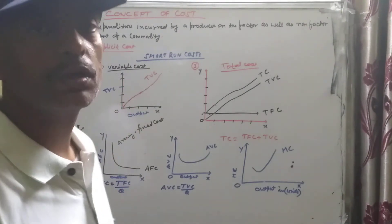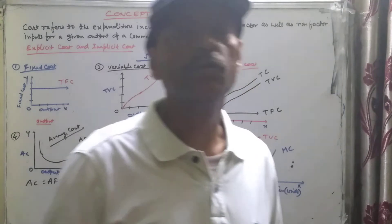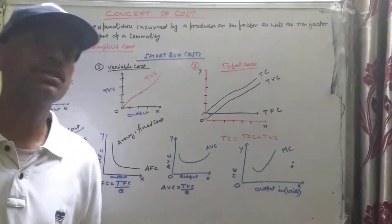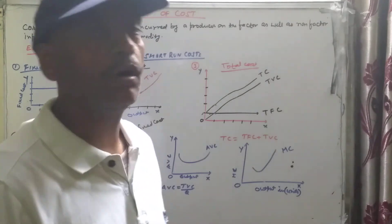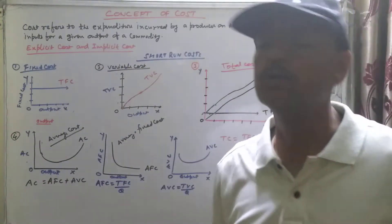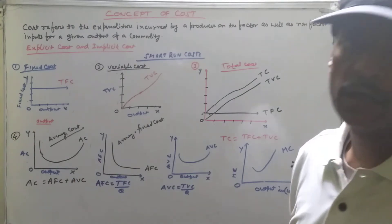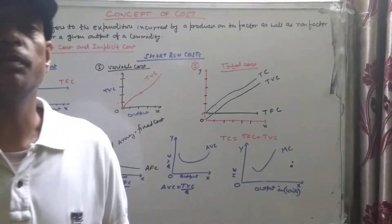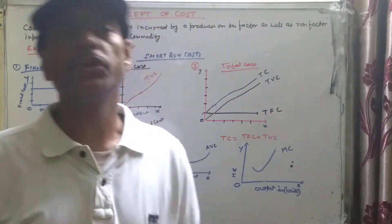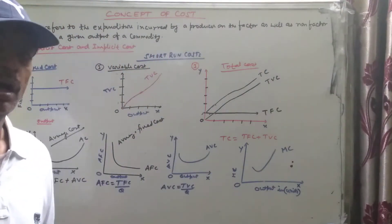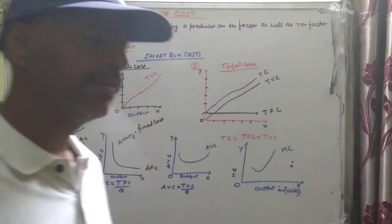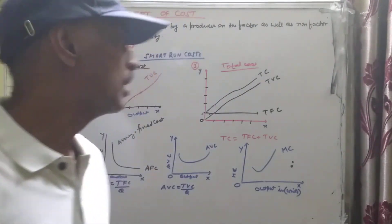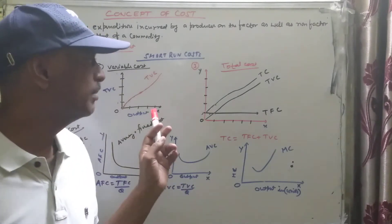Variable costs are those costs which can vary — which can be changed on the basis of production or output. If the firm wants to increase their output, the variable cost increases. And if they want to reduce the output, variable cost also decreases. They can be changed based on the production level.